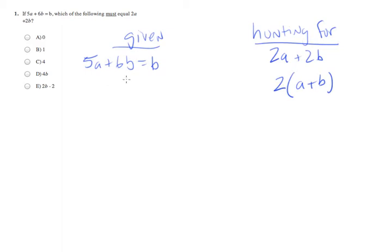So back over here on the given side I notice that we have a b on both sides of the equation. General algebra rule when you're simplifying you always want to collect variables. So I'm going to subtract b from both sides and see what that yields. We end up with 5a plus 5b equals 0.